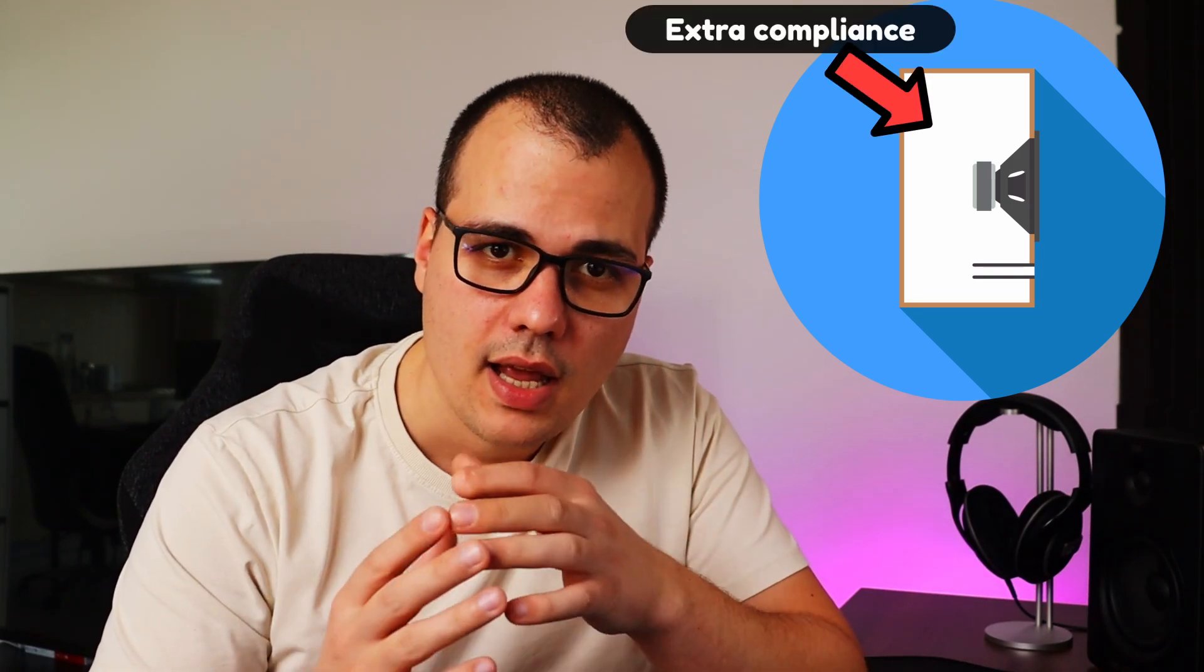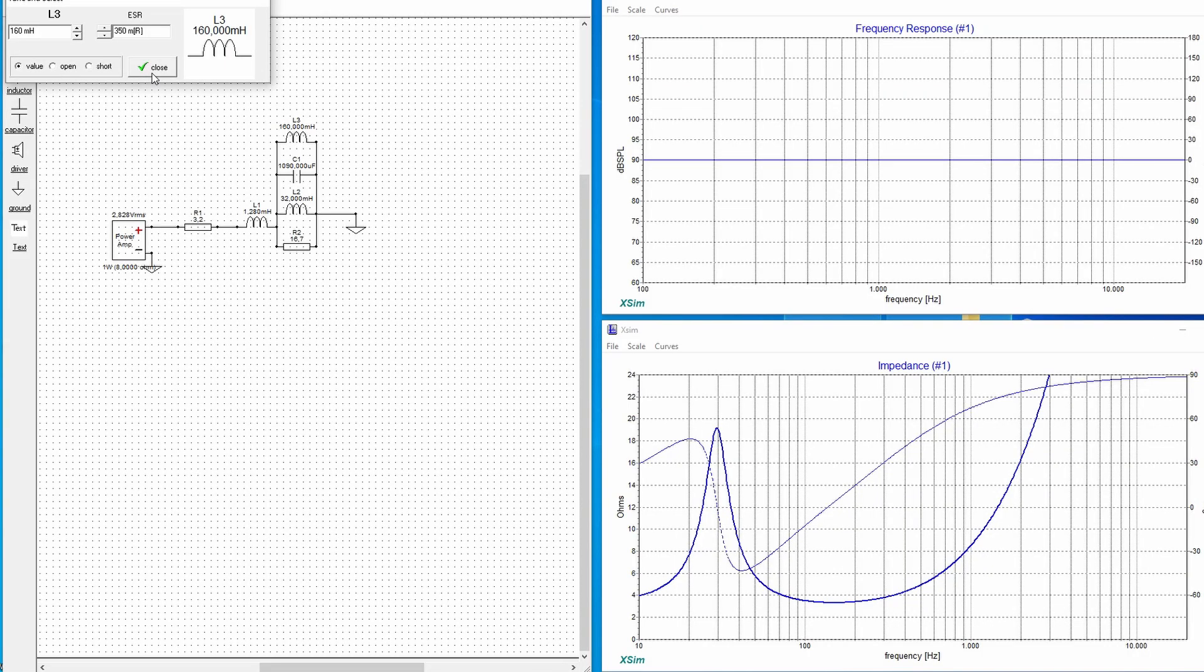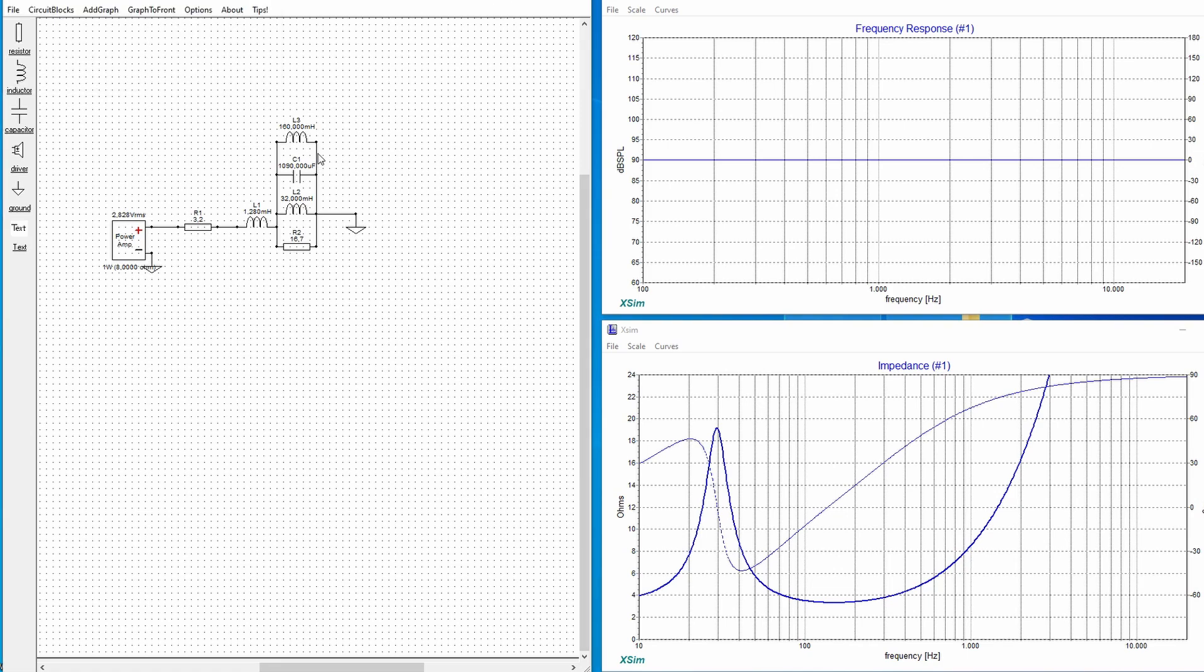If I want to simulate a bass reflex box, you add two more elements. You have the box volume, which is an extra compliance, and you also have the mass of air inside the port, which is a capacitor. And this means we have to wire an additional inductor and capacitor because now we have the port as well. So we have a capacitor over here. So we have to add another inductor and a capacitor in parallel.